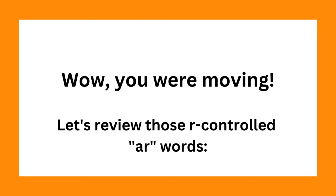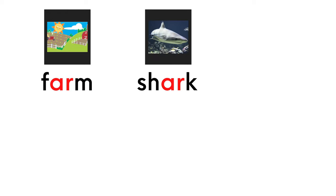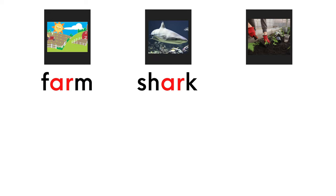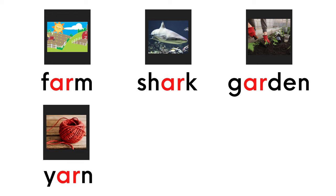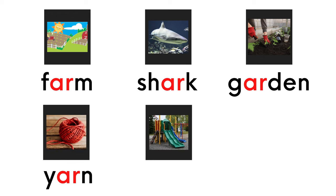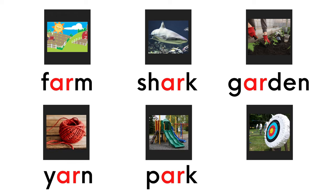Wow, you are moving! Let's review those R-controlled AR words. Farm. Shark. Garden. Yarn. Park. Target.